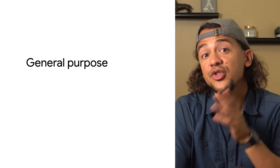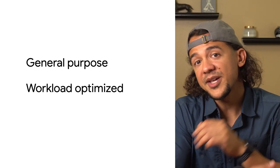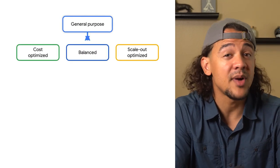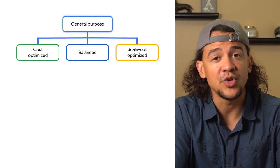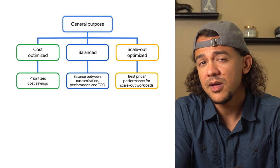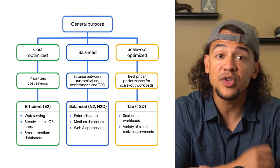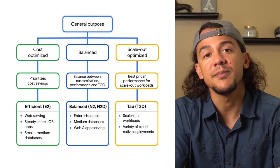If you want to choose the right VM, let's review how VMs are organized in Google Cloud. All VMs are categorized into either general purpose or workload-optimized families. General purpose machines provide the best price performance ratio for a variety of workloads. As of right now, there are three machine types within the general purpose family.